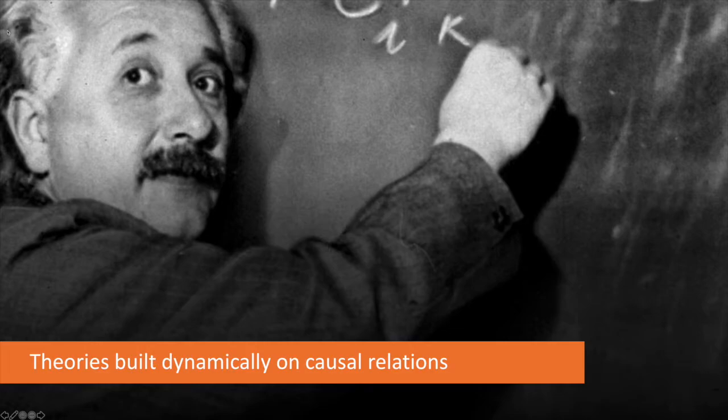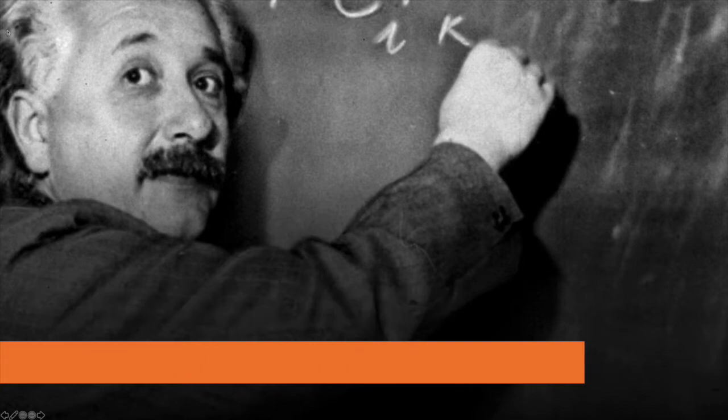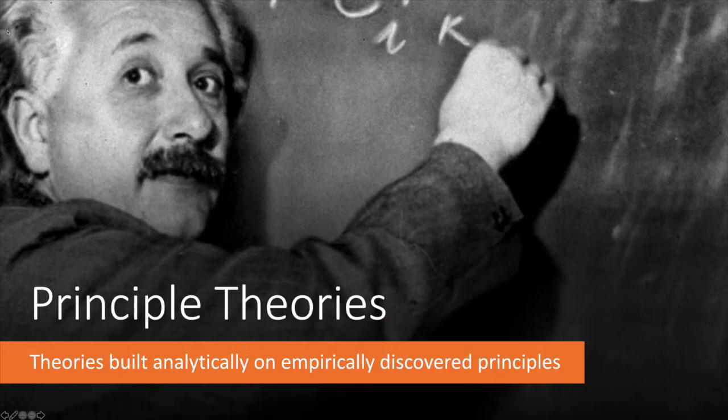In physics, Einstein called theories built dynamically on causal relations constructive theories. Examples would be Newtonian and statistical mechanics. In contrast, he called theories built analytically on empirically discovered principles principle theories. Examples there include special relativity and thermodynamics.